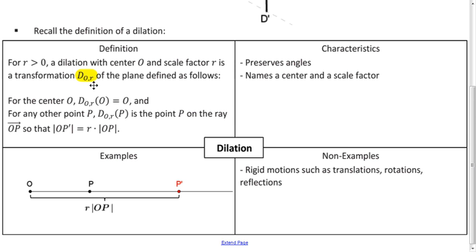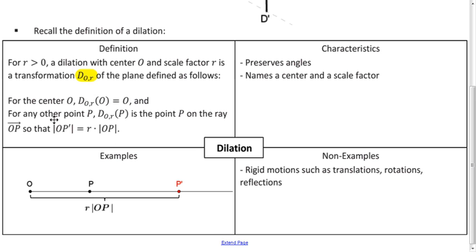The two parameters are the center and the scale factor. If you're doing the dilation to find out where the point is in the image, you take the distance from the center to the point in the pre-image, multiply that distance by your scale factor R, and that gives you the distance from your center to the corresponding point in the image. In mathematics we use absolute value symbols to signify a distance.